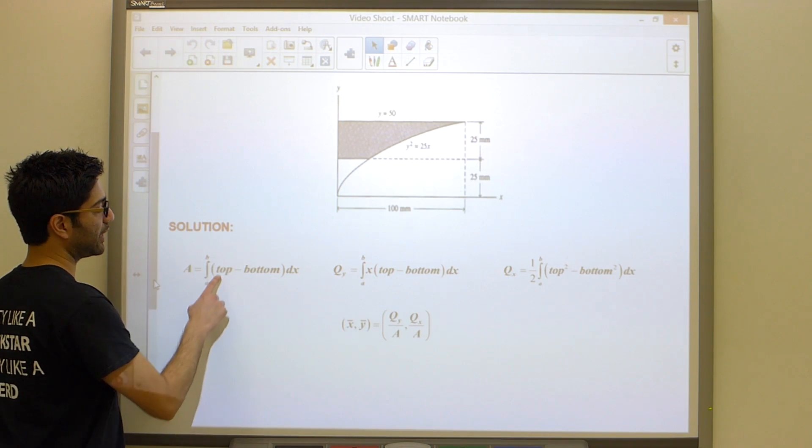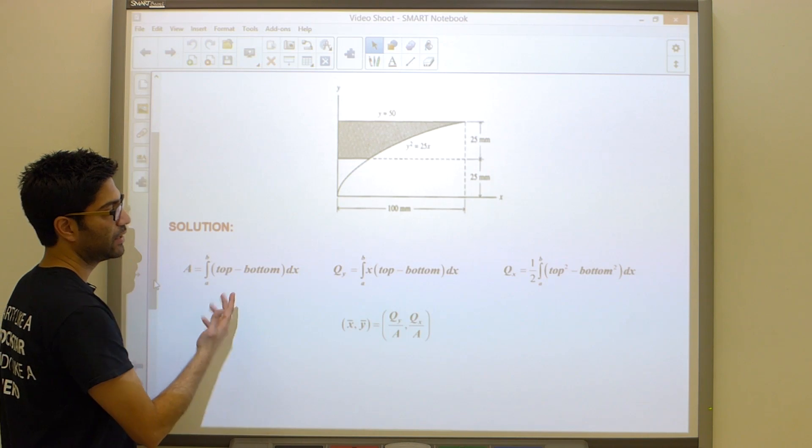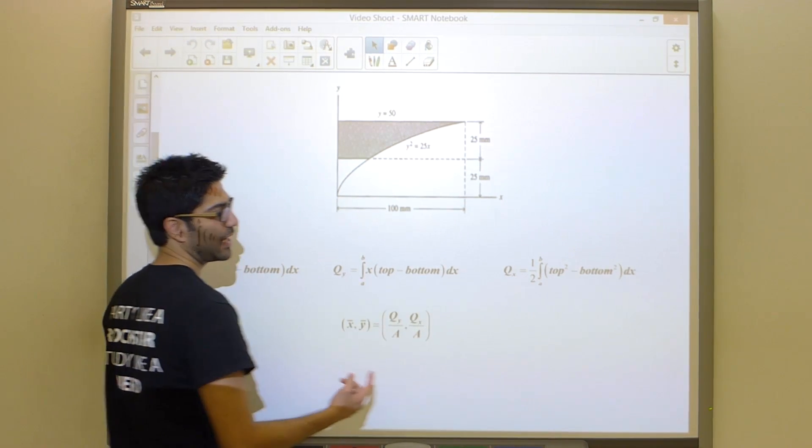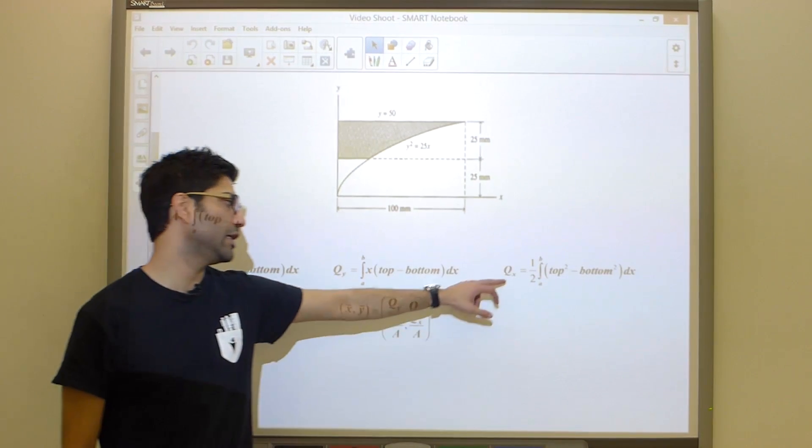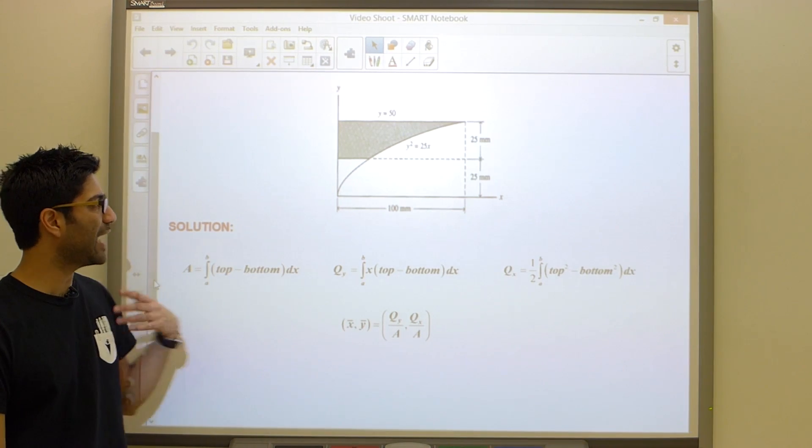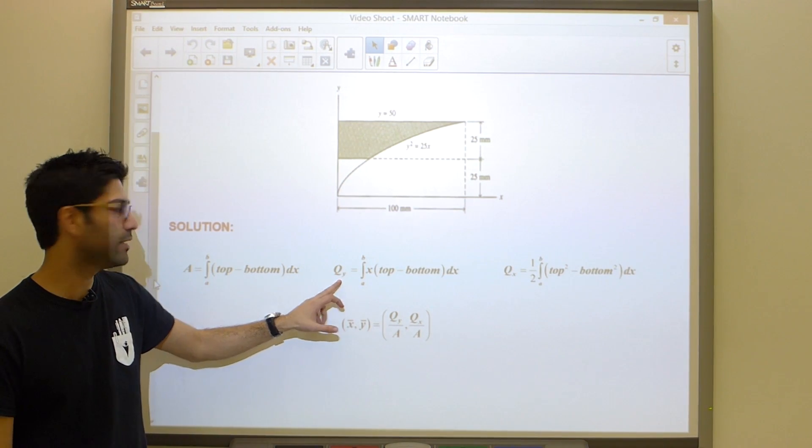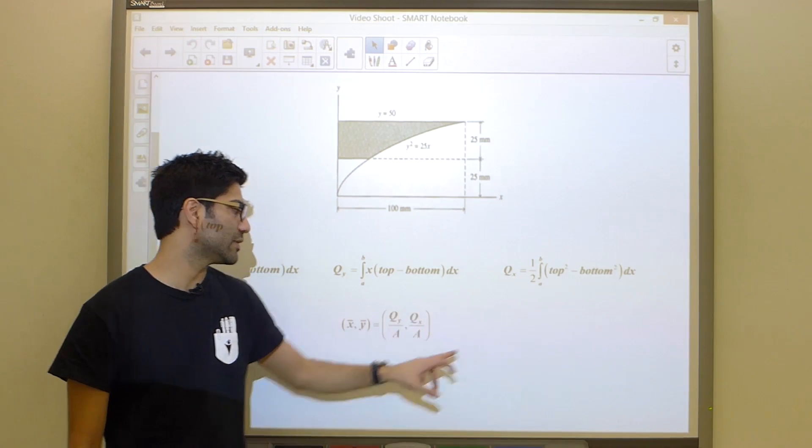We calculate the area by taking the top function minus the bottom function and integrating it. Then we multiply this term by x, repeat the process and apply this formula to get the first moment about the x-axis. Finally remember that in order to get the x-coordinate, it is Qy divided by A, and to get y-bar, it is Qx divided by A.